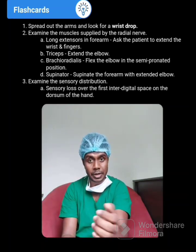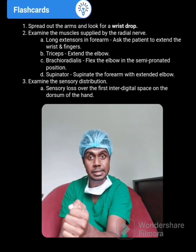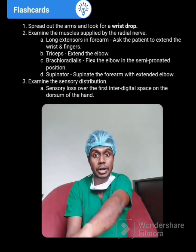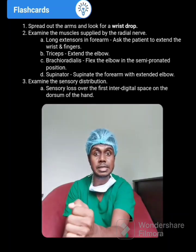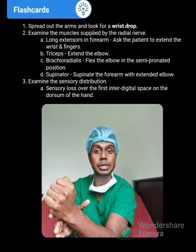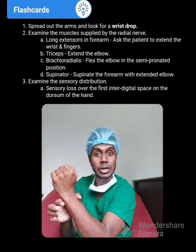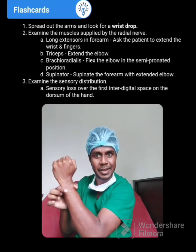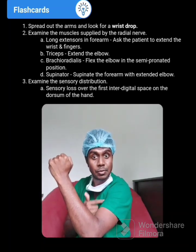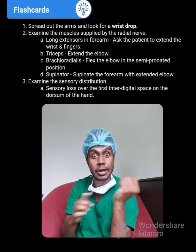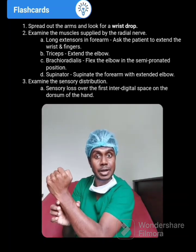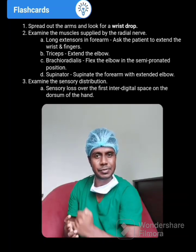Then you have to check the brachioradialis muscle as well. Ask your patient to keep the hand in the semi-pronated position — this is supine, this is pronated, this is semi-pronated — and ask your patient to flex the elbow against resistance. If there is brachioradialis palsy indicating radial nerve palsy, he won't be able to flex the elbow either.